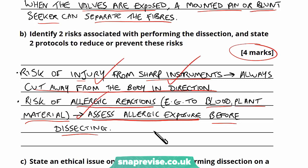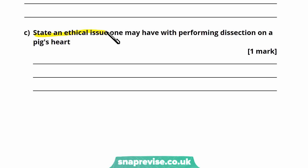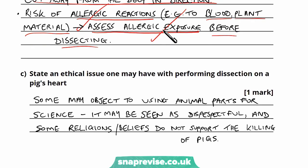That's the four marks — two risks and each protocol. The next question says: state an ethical issue one may have with performing dissection on a pig's heart. In biology, ethical issues come up quite a lot. As mentioned in the last video, some people may have beliefs or opinions against dissection. I've written that some may object to using animal parts for science, seeing it as disrespectful, and in some religions and practices they do not support the killing of pigs. Any of those angles would be perfectly acceptable.